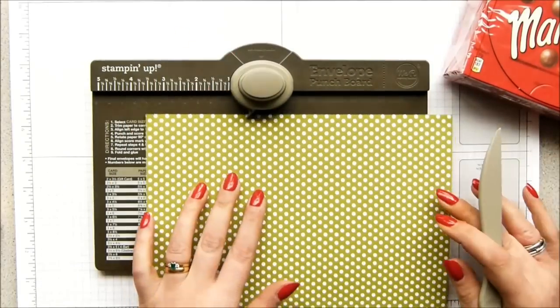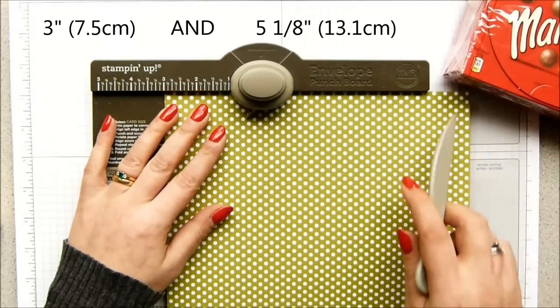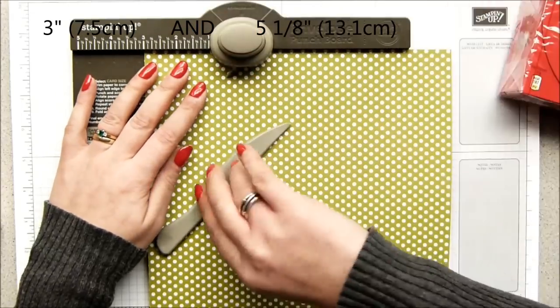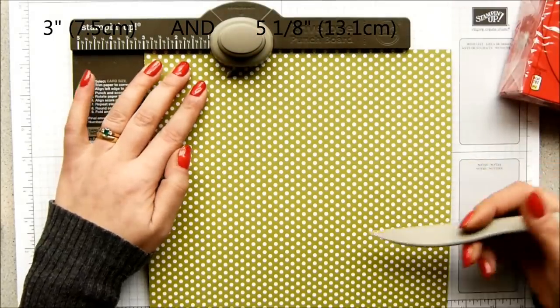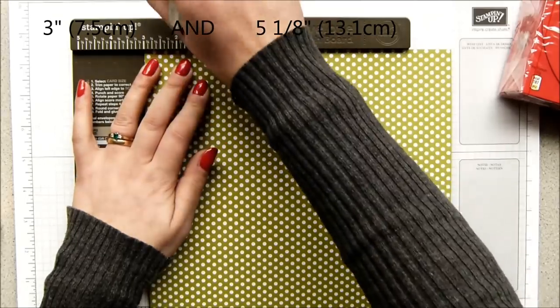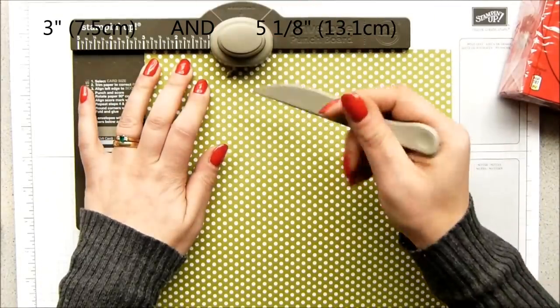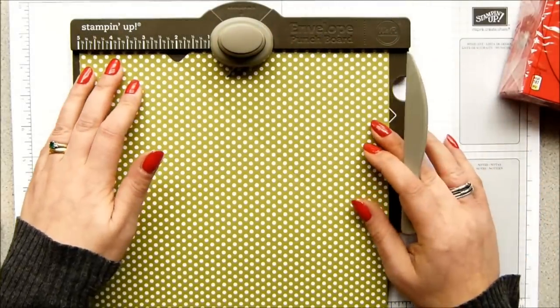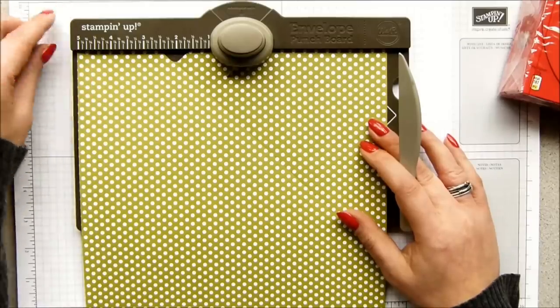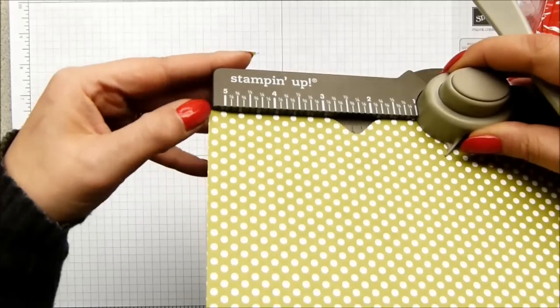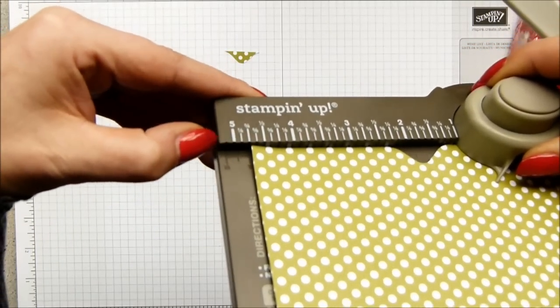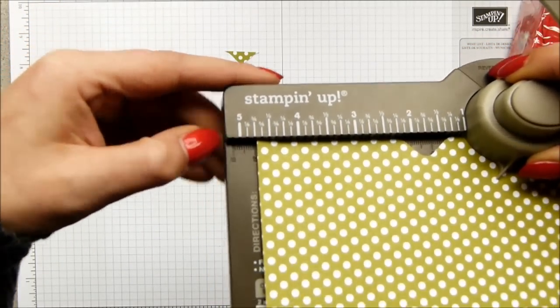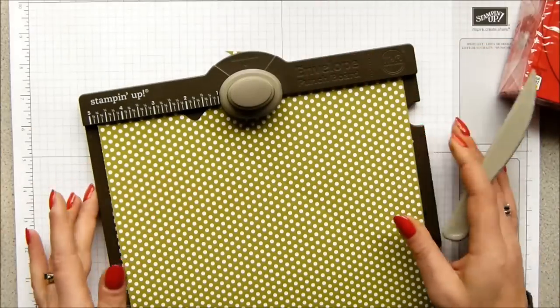The first punch and score line comes at three. Now you can see it's not going to fit onto the paper or fit onto the board itself, but don't worry, I'm going to show you how to come around and fix that in a minute. So you punch and score at three, but don't go off the edge, and at five and one-eighth, which is just here.